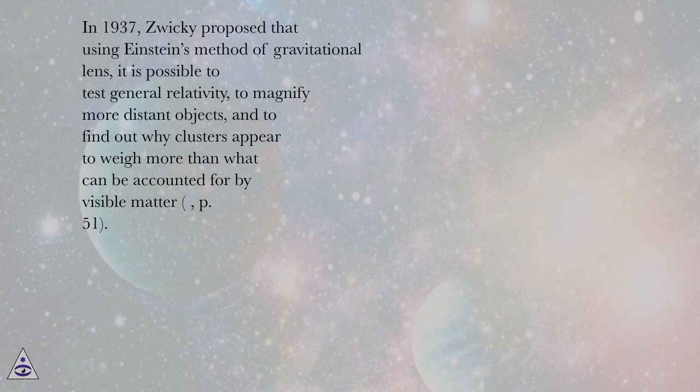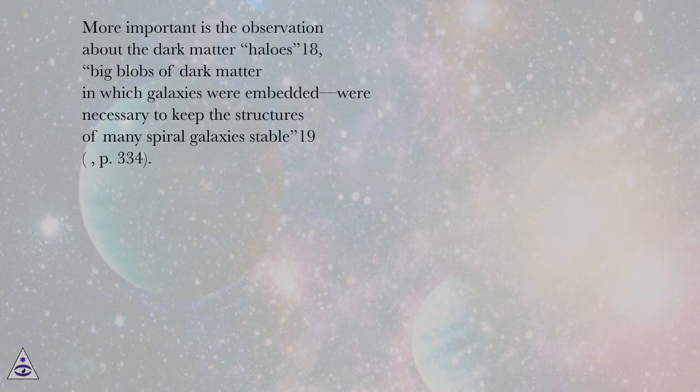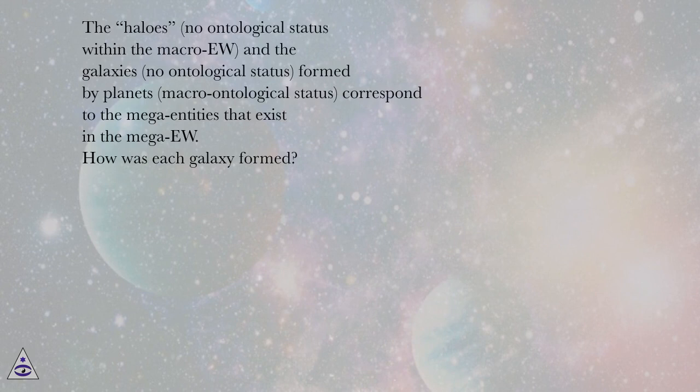More important is the observation about the dark matter halos: big blobs of dark matter in which galaxies were embedded, were necessary to keep the structures of many spiral galaxies stable, page 334. The halos, no ontological status within the macro-EU, and the galaxies, no ontological status, formed by planets, macro ontological status, correspond to the mega entities that exist in the mega-EU.